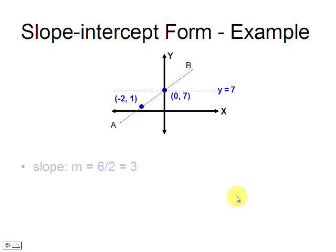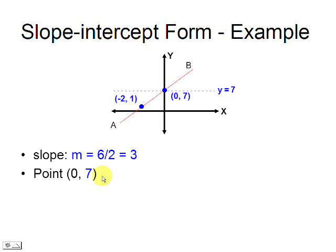In this last example, we are given the y-intercept and we can easily calculate the slope. The y-intercept is 7 and the slope is 3. Then, the slope-intercept equation is y equals 3x plus 7.